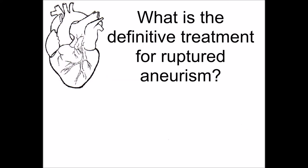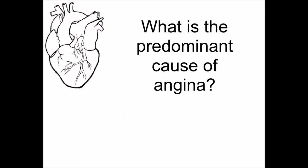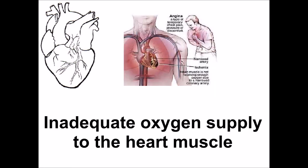What is the definitive treatment for a ruptured aneurysm? Surgery. What is the predominant cause of angina? Inadequate oxygen supply to the heart muscle.